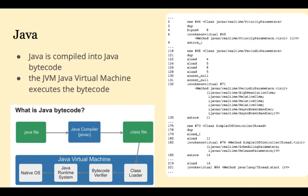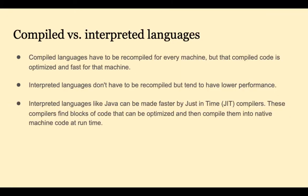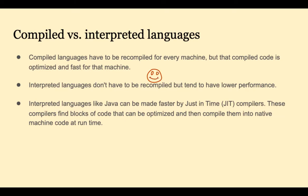MIPS instructions are always four bytes. Java bytecode instructions vary from one to five bytes because the original designers were concerned about conserving memory. There are advantages to compiled languages and advantages to interpreted languages. A compiled language has to be recompiled for every machine type, but that compiled code is highly optimized for that machine. The advantage of interpreted languages is that they don't have to be recompiled, but they tend to be a bit slower.